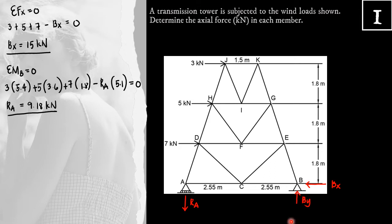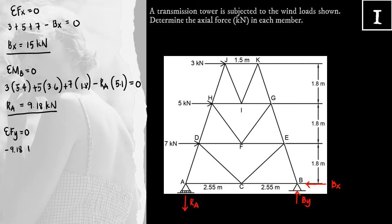To solve for BY, we use summation FY equal to 0. Notice that we have no vertical external force. Therefore, BY should balance RA. If RA is downward, BY should be upward. Following the sign convention — positive upward, negative downward — we have negative RA, or negative 9.18, plus BY equal to 0. Therefore, BY is also equal to 9.18 kilonewtons.